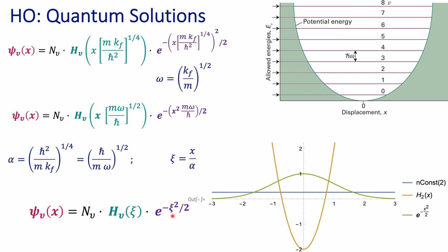If we plot these three functions, you're going to see something interesting. The normalization constant is always a fixed value — a horizontal line. The Gaussian has a bell curve shape. The Hermite polynomial is a polynomial of degree related to the principal quantum number. Neither the normalization constant nor the Gaussian function will give you nodes for your wave function. The nodes are going to be given by the Hermite polynomial. If you have a Hermite polynomial of order 2 — the second excited state — you're going to have two points where the polynomial crosses the axis, and those are your nodes.